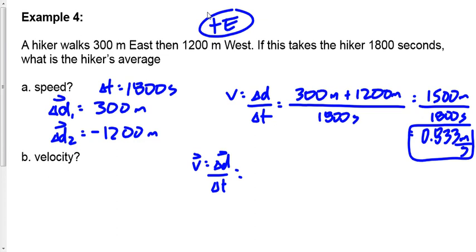Stop and think about realism — I said 83.3 first but my decimal was off. Is 83 meters per second a realistic answer for a hiker? That's three quarters of a football field per second, faster than Usain Bolt whose peak speed is just over 50 kilometers per hour. This would be closer to 300 kilometers per hour — Usain Bolt on steroids times ten.